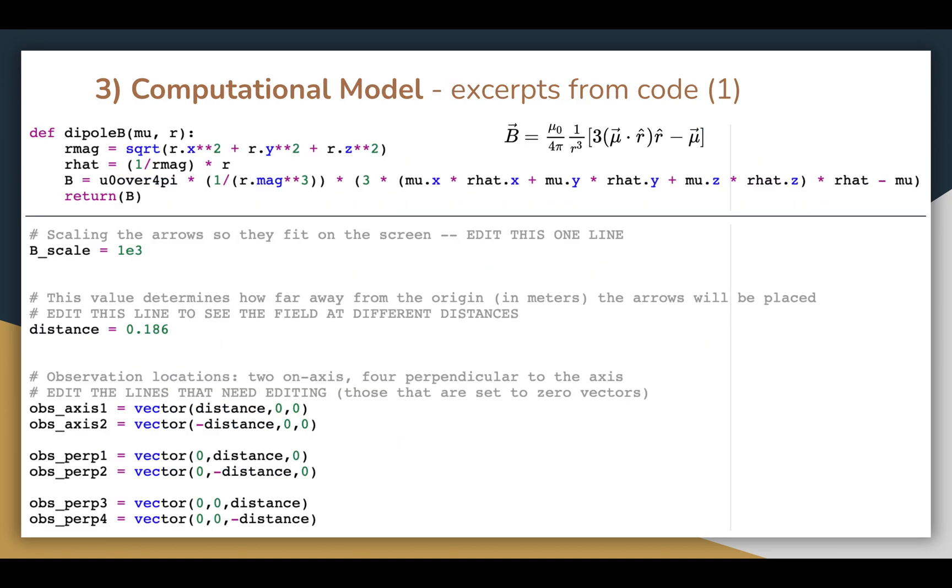So now moving on to my computational model. The first thing I did was define a function for calculating the magnetic field due to a dipole with a given magnetic dipole moment and a specified observation location. I used the formula I mentioned earlier, shown here again for reference.